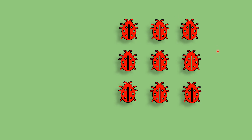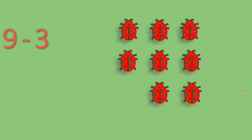Insects. How many insects are there? Let's count. 1, 2, 3, 4, 5, 6, 7, 8, 9. 9 insects are there. We will write 9, minus 3. That means 3 insects go away. 1 go away, 2 go away, and 3 go away. How many insects are there?